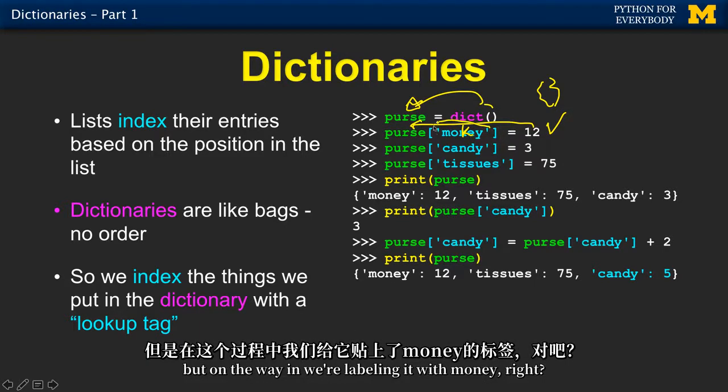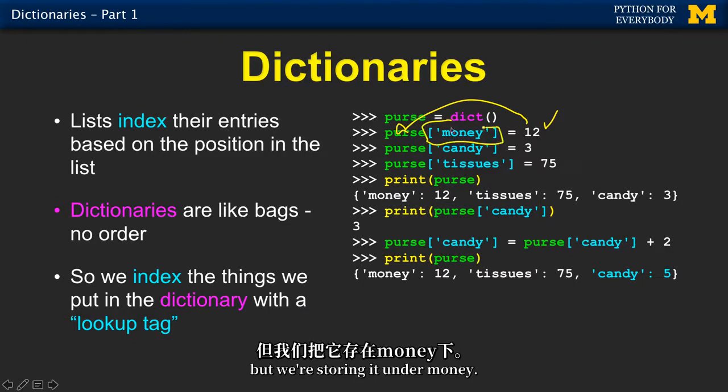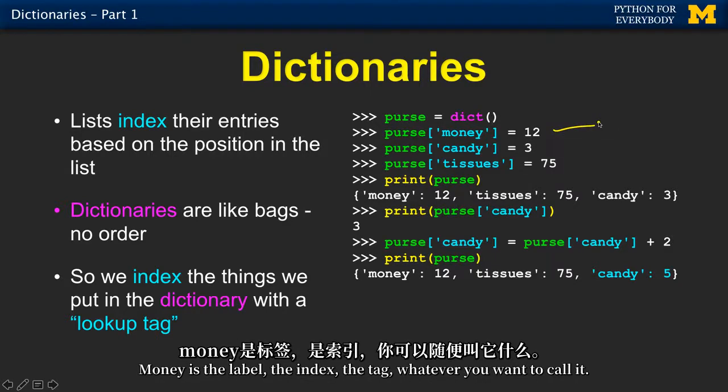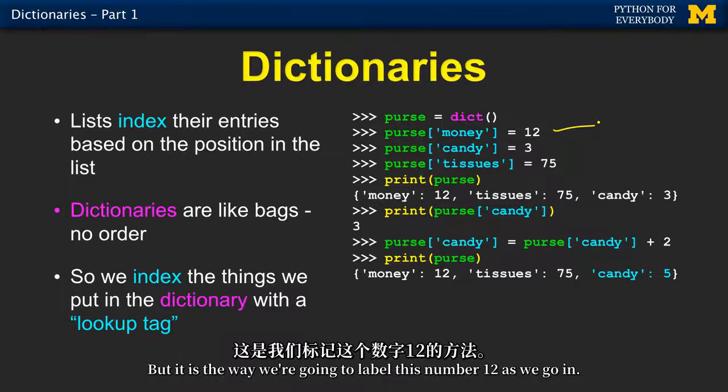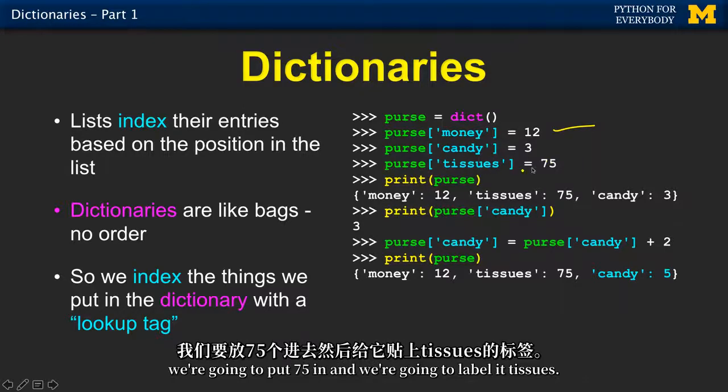So 12 is going in, 12 is the value, and we're putting it into purse, but we're storing it under money. So I would say this as purse sub money equals 12. Money is the label, the index, the tag, whatever you want to call it. But it is the way we're going to label this number 12 as we go in. And we're going to put three in, and we're going to label it candy, and we're going to put 75 in it, and we're going to label it tissues.